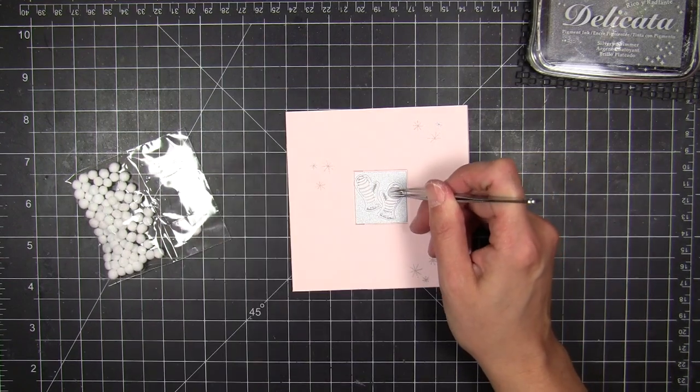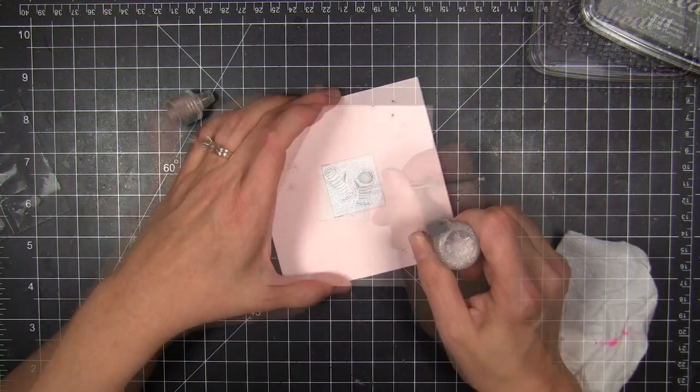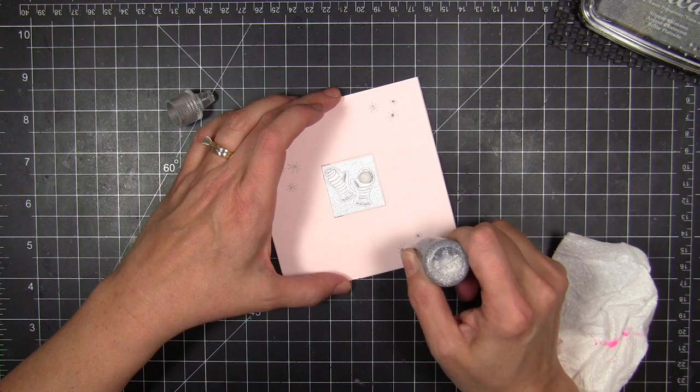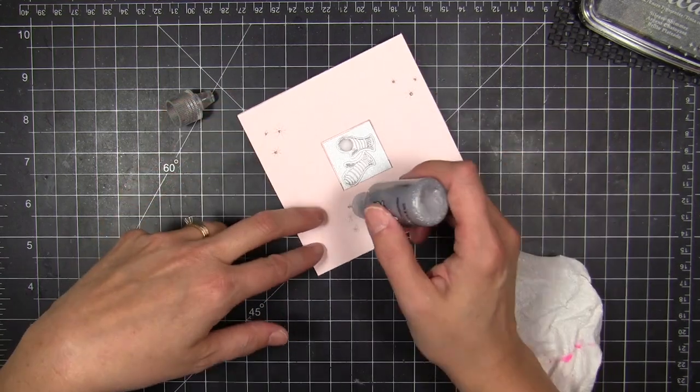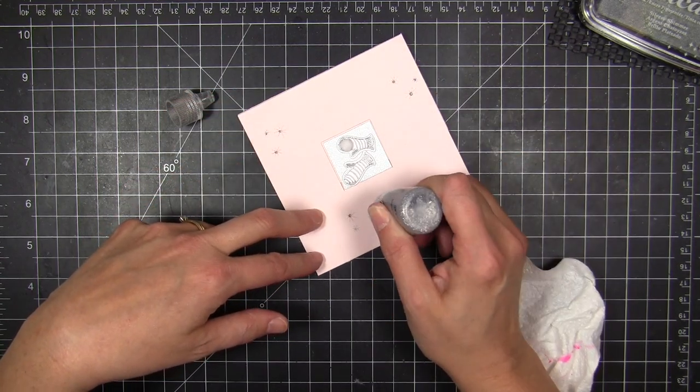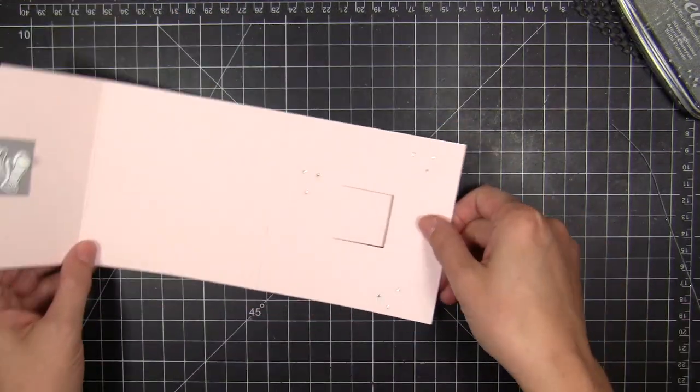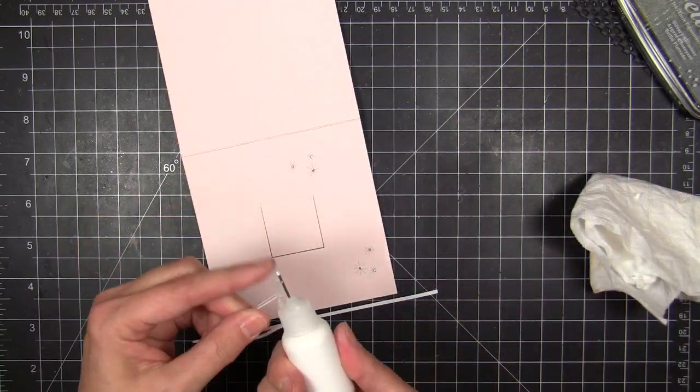So now I've got the gloves mounted in place and I just used Tape Runner to do that. Then I'm going to take a pom-pom and some multi-medium and go ahead and anchor that down in place.